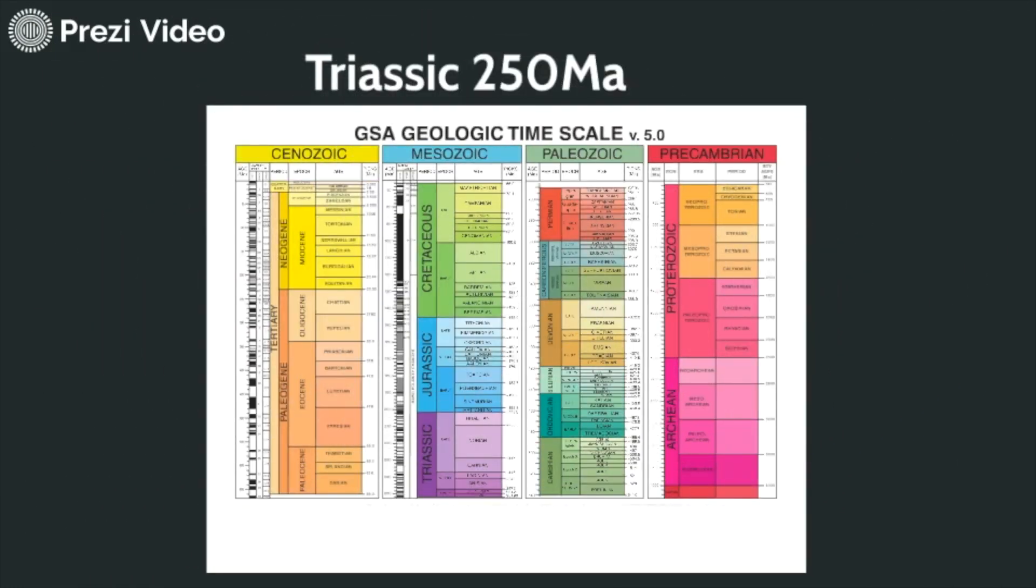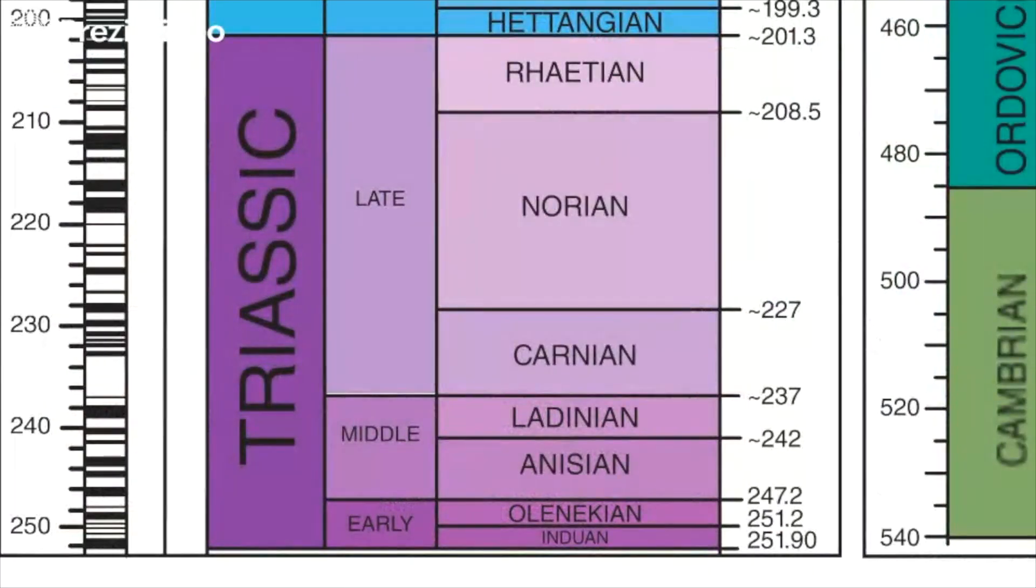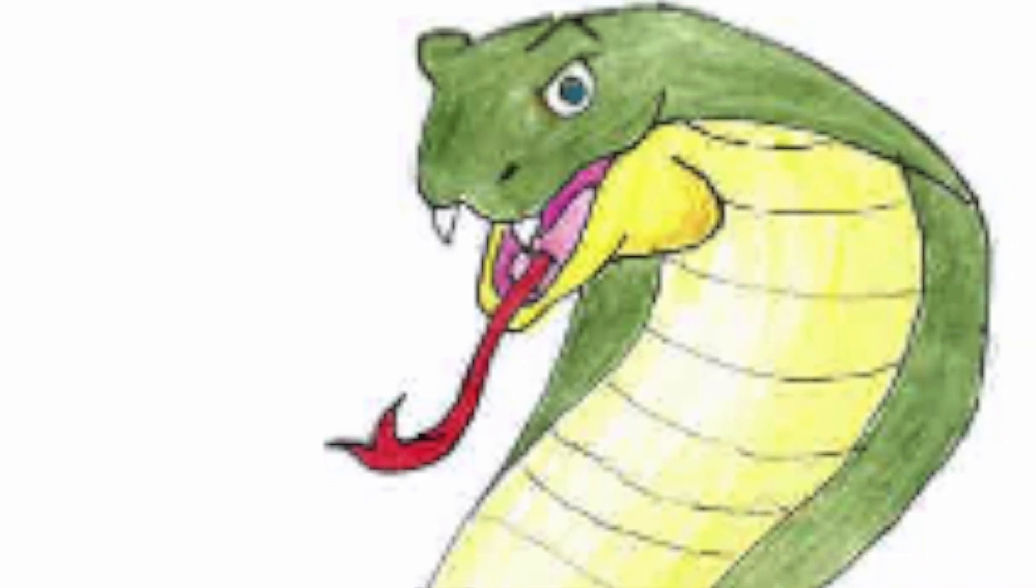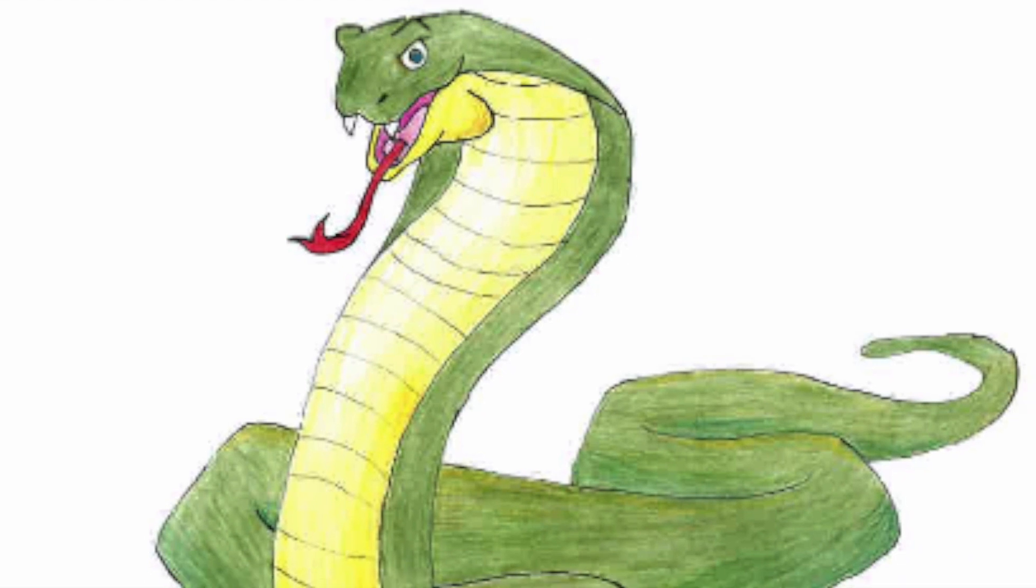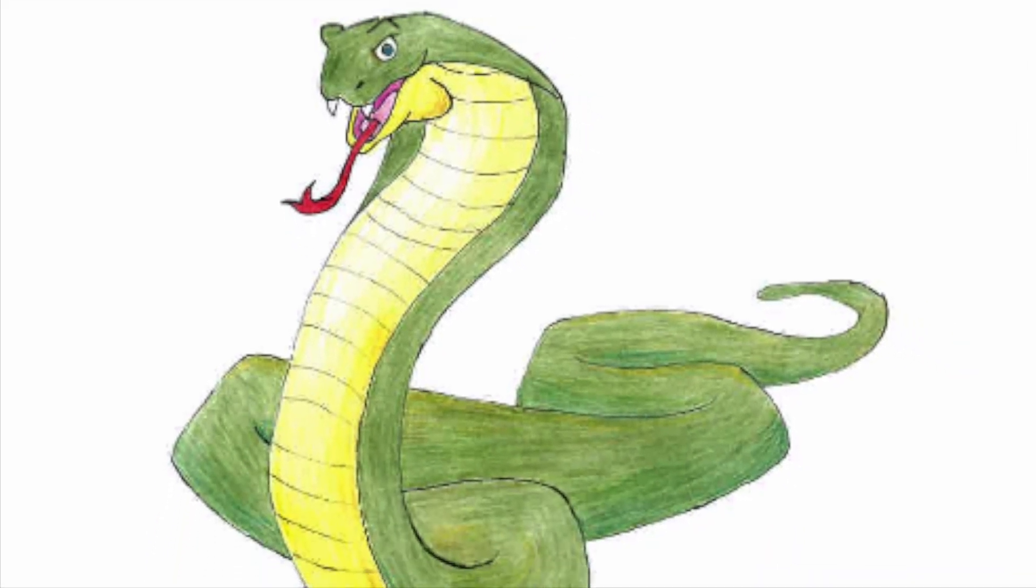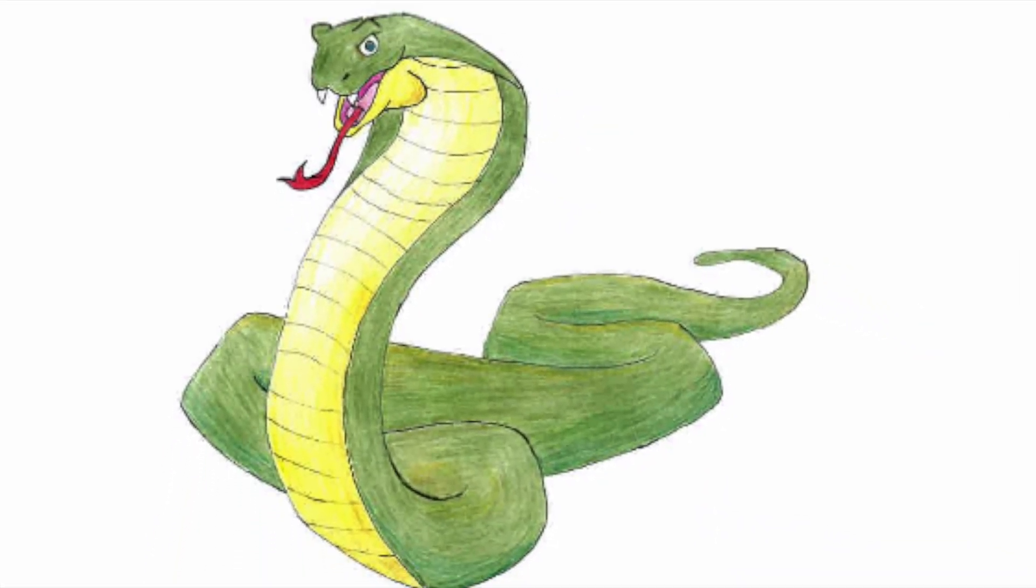250 million years ago, we entered the Triassic period. Here we see fossil evidence for grooved reptilian teeth, similar to some extant venomous snakes. These grooves are hypothesized channels for salivary venom, and would mark the earliest known example of venomous reptiles.